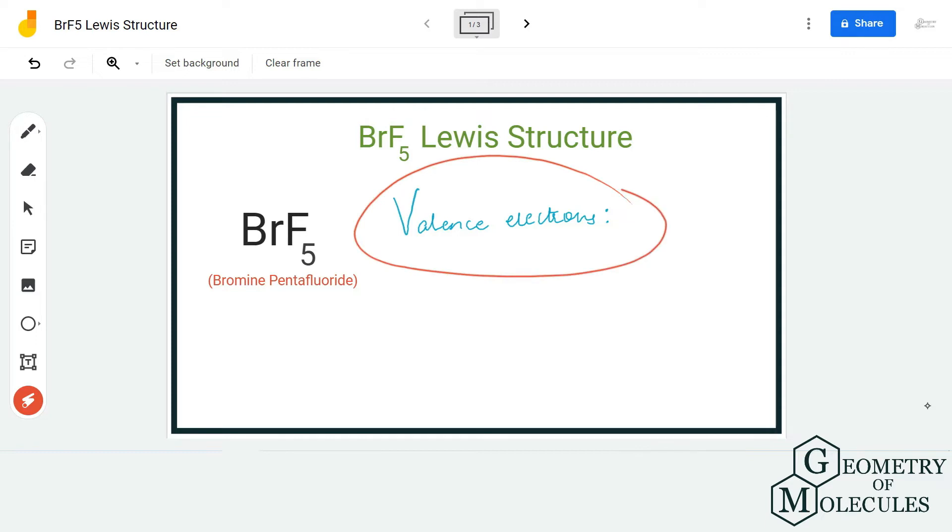To start with its Lewis structure, we first need to know the total number of valence electrons for this molecule. We have one atom of bromine and five atoms of fluorine, and both bromine and fluorine have seven valence electrons in their outer shell, which means we have a total of 42 valence electrons for this molecule.